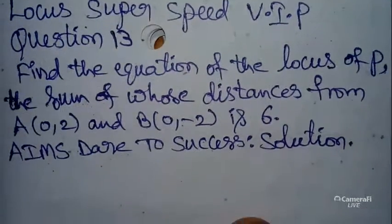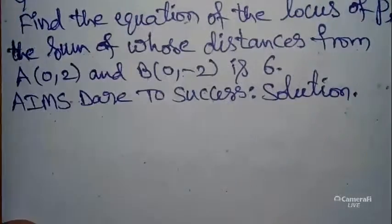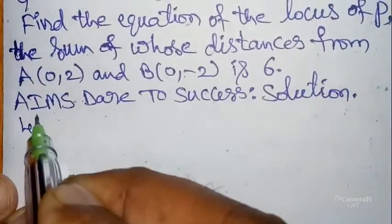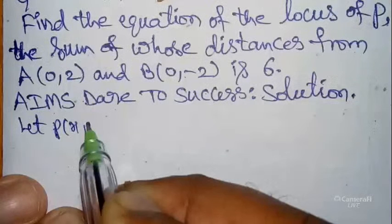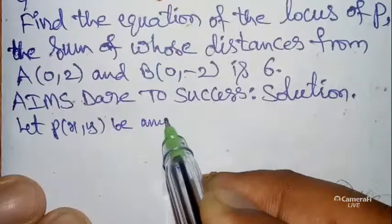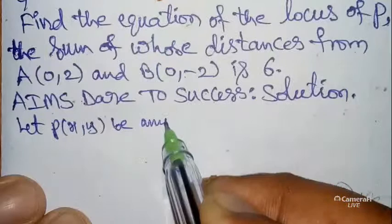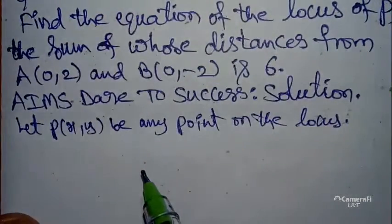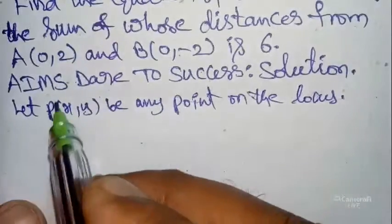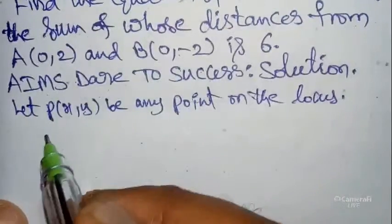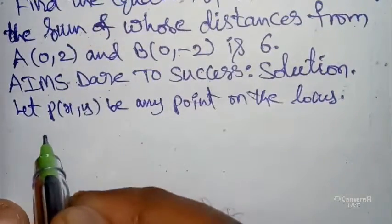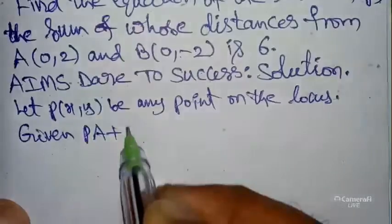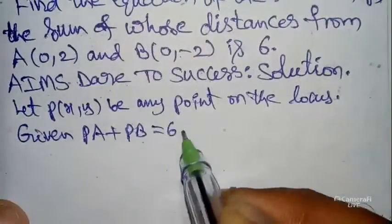Find the equation of the locus of P, the sum of whose distances from A and B is 6. First of all, let P be a point with coordinates (x, y). It is given that the sum of distances from A and B equals 6 — so PA + PB = 6.